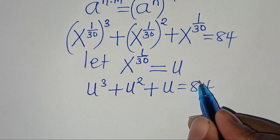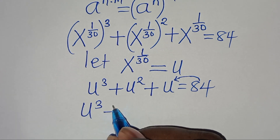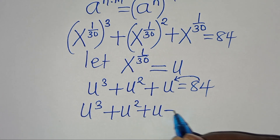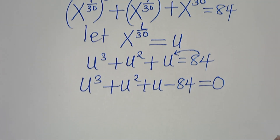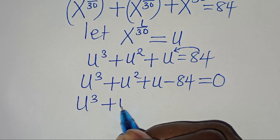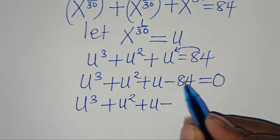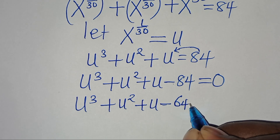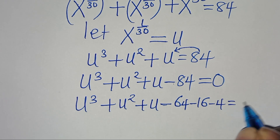The next step is to take 84 to the left-hand side, so that we have u to the power of 3 plus u to the power of 2 plus u minus 84 equals 0. Now, minus 84 can be expressed as minus 64 minus 16 minus 4, so this equals 0.